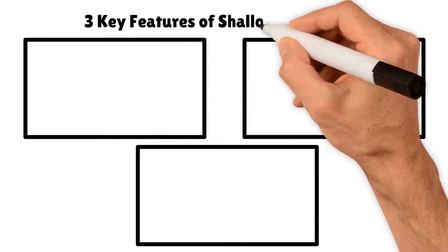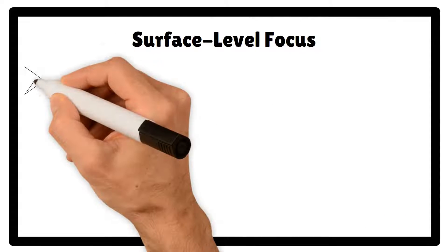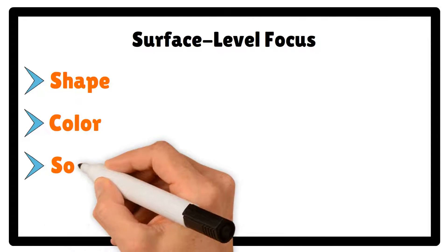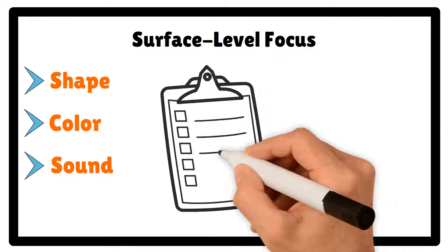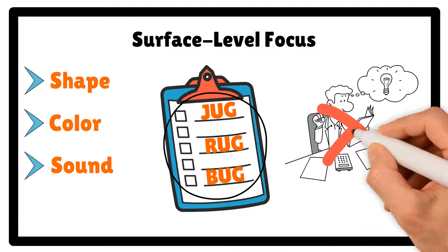Let's look at three key features of shallow processing. The first is its surface level focus. Shallow processing deals with basic features like the shape, color, or sound of information. For instance, you might notice that a word is in all capital letters or that it rhymes with another word. This type of focus does not require any understanding of the meaning behind the information.